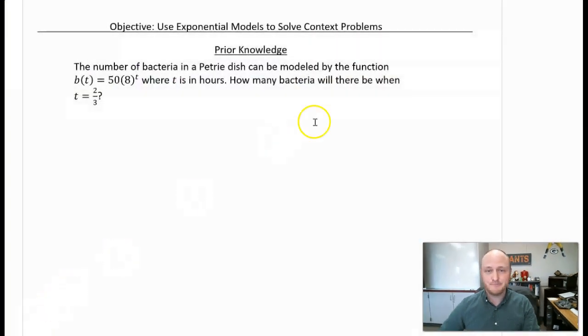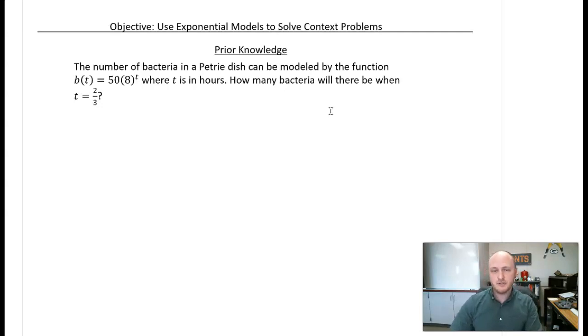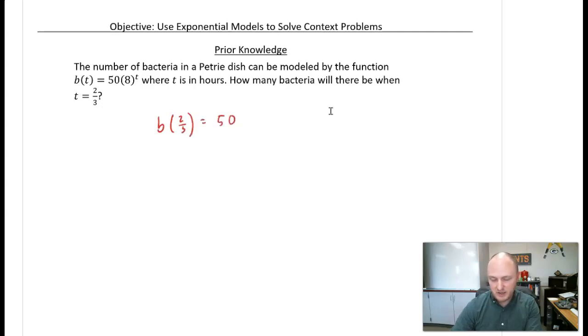Just some prior knowledge — this problem says the number of bacteria in a petri dish can be modeled by the function b of t, where t is in hours. They ask: how many bacteria will there be when t equals two-thirds? All you have to do is evaluate b of two-thirds — plug in two-thirds for t, so we have a power of two-thirds.